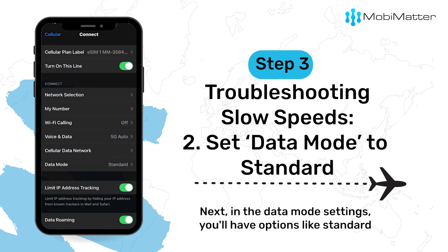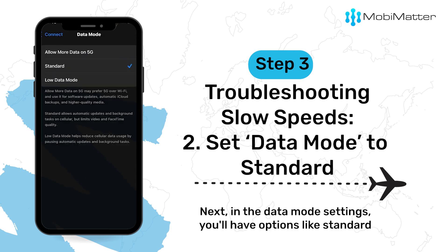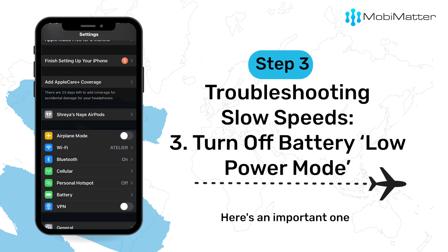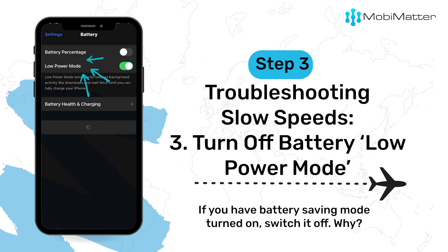Next, in the Data Mode settings, you'll have options like Standard, Low Data Mode, and Allow More Data — choose Standard. Here's an important one: if you have Battery Saving Mode turned on, switch it off.